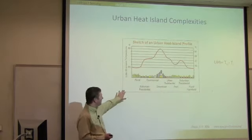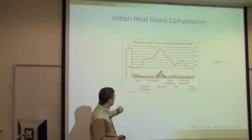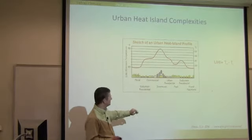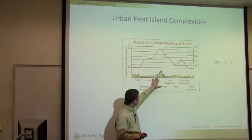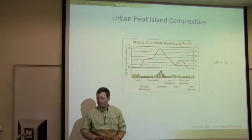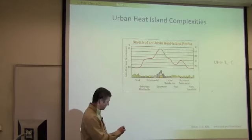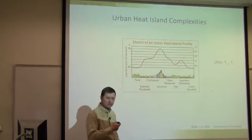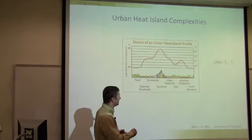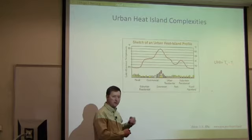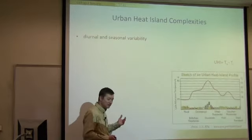The most common representation you'll find in the literature is a plot attributed to the US EPA, showing warming in the heart of the city and cooling as you go out to the suburbs. But this representation — simply a difference in urban and rural temperature — is overly simplistic.